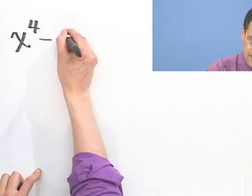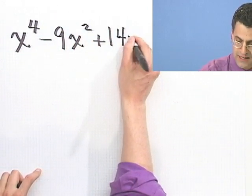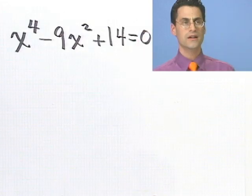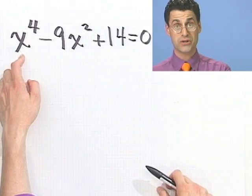x to the fourth minus 9x squared plus 14 equals 0. Now, you look at that and say, that's a quartic. The highest degree is 4. This doesn't look too good.